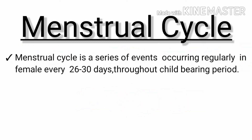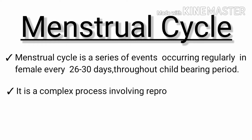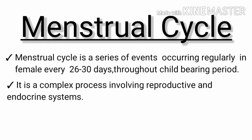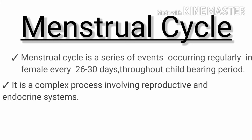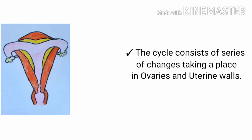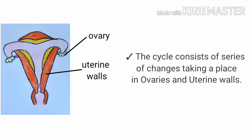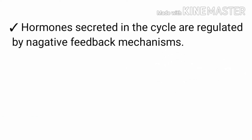The menstrual cycle is a series of events occurring regularly in females every 26 to 30 days throughout the child-bearing period. It is a complex process involving the reproductive and endocrine systems. The cycle consists of a series of changes taking place in the ovaries and uterine walls. Hormones secreted in the cycle are regulated by negative feedback mechanisms.